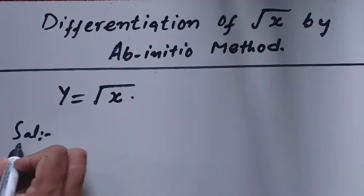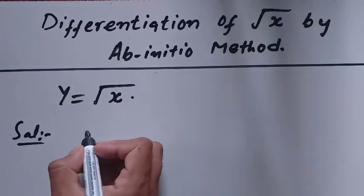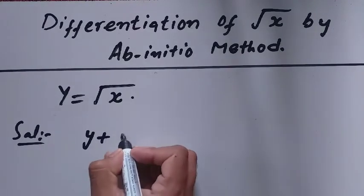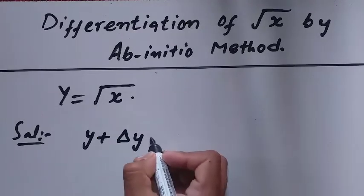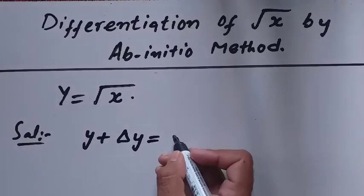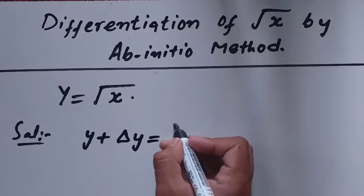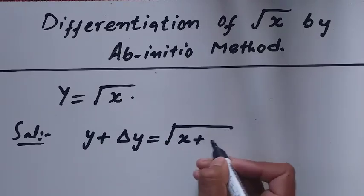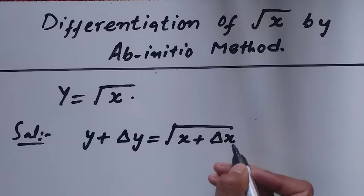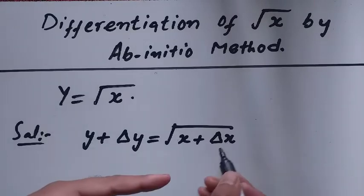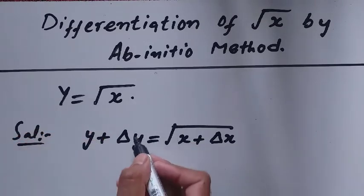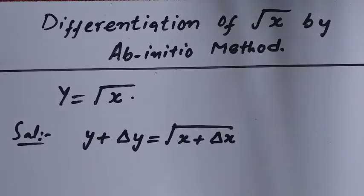Solution. I can write here: y plus delta y is equal to under root of x plus delta x. Because a small change in the independent variable causes a small change in the dependent variable as well.